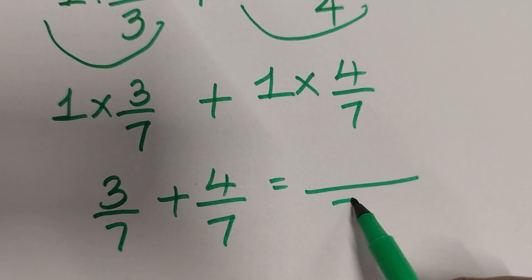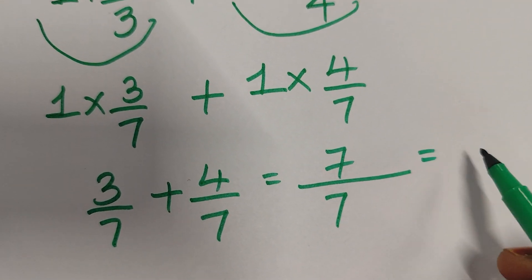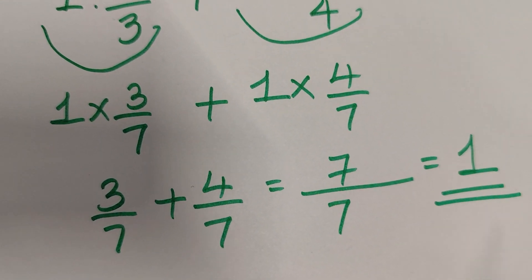So, same denominator, denominator is 7. 3 plus 4 is 7, 7 divided by 7, answer is 1.